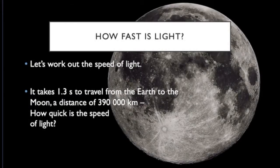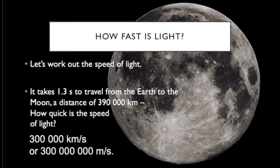So let's just have an aside here and look at how fast light is and we can work it out. We can work it out if we know that it takes 1.3 seconds to travel from the Earth to the Moon, and that's a distance of 390,000 kilometers.